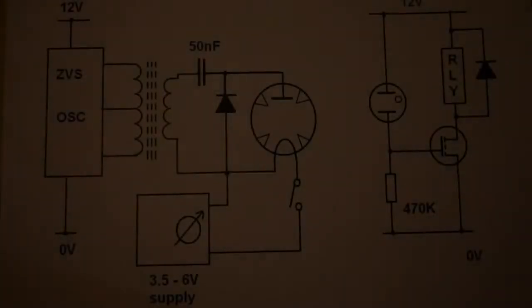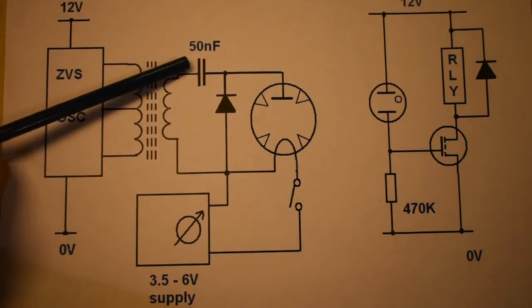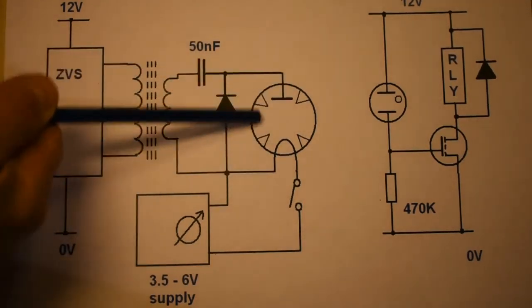Okay, this is the circuit we have for the flashing light. We have a 12 volt supply and a ZVS oscillator, which is driving this transformer and producing a high voltage, but this is a doubler arrangement for the anode plate of the magnetron.